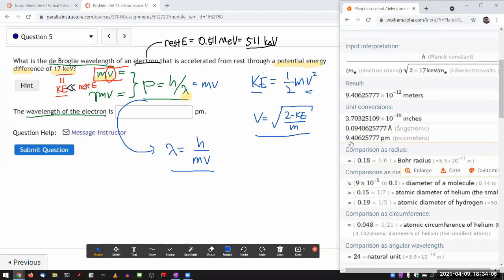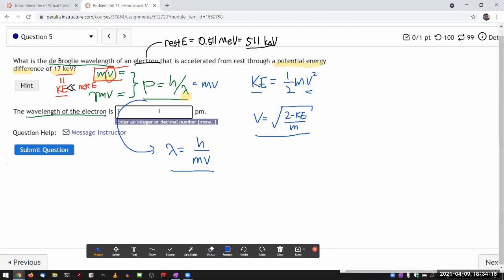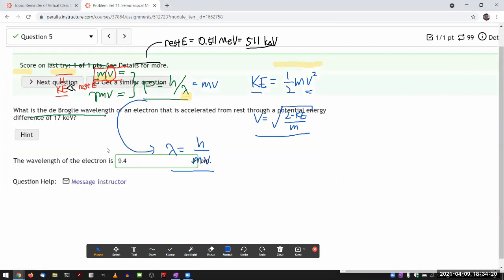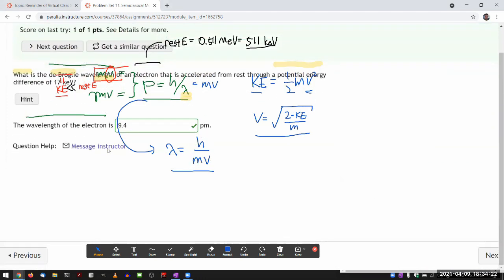So 9.4 picometers. So let me try that as the answer, see if it says it's wrong, and if it says it's wrong, I'll do the relativistic version. And even if it says it's correct, I think it's good to work, yeah, so it's going to say it's correct.